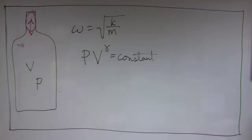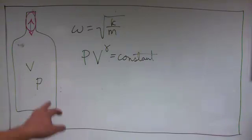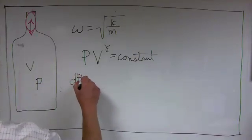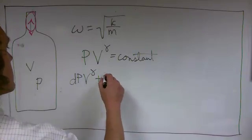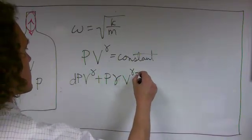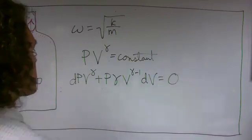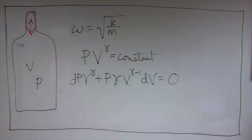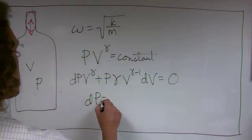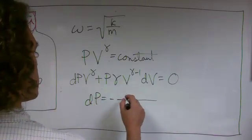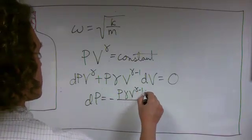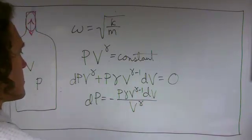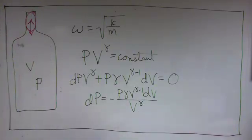We can use this to find the spring constant of the air inside the main part of the bottle. To do this, let's start by deriving a differential element. I've taken the derivative of this and solved for dp.